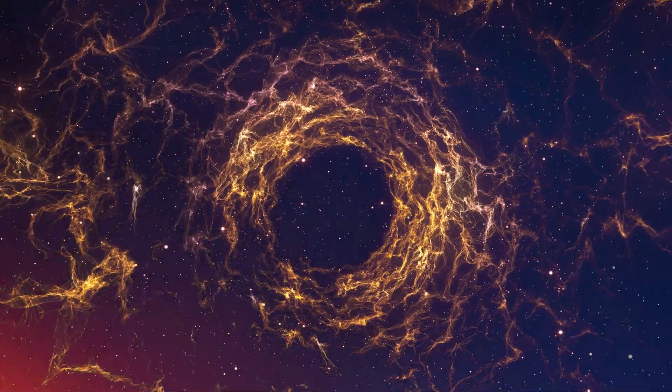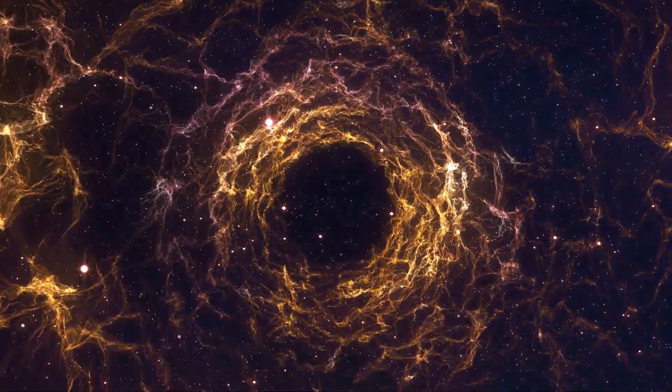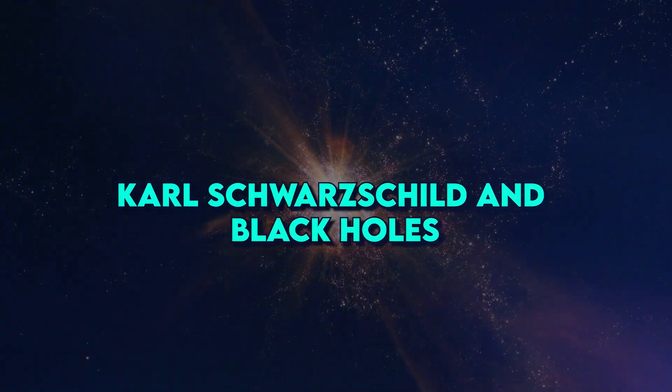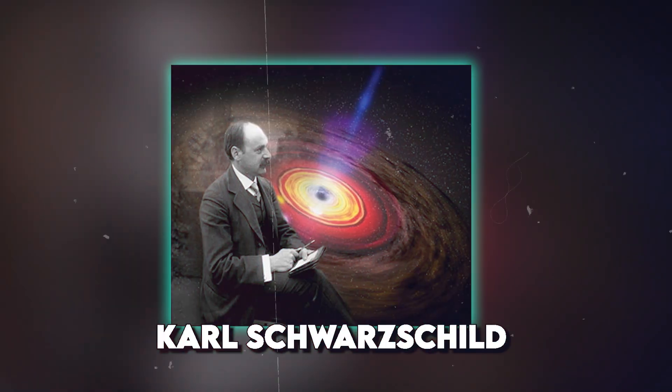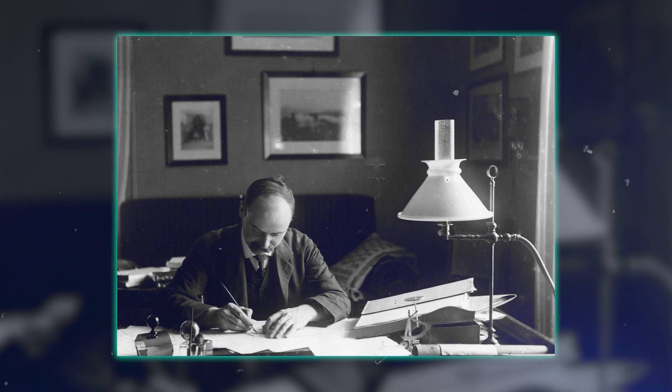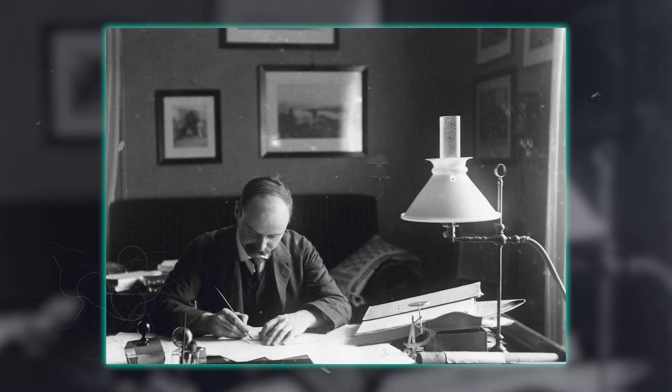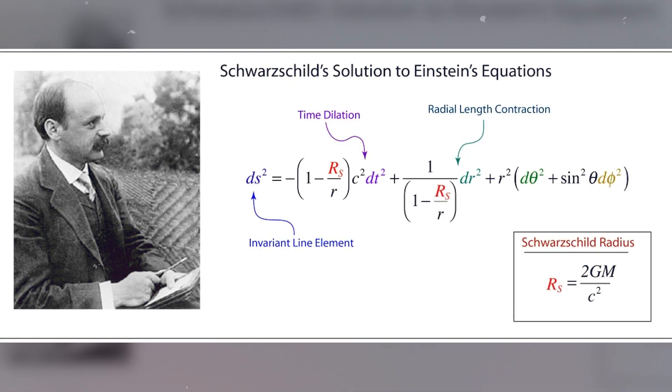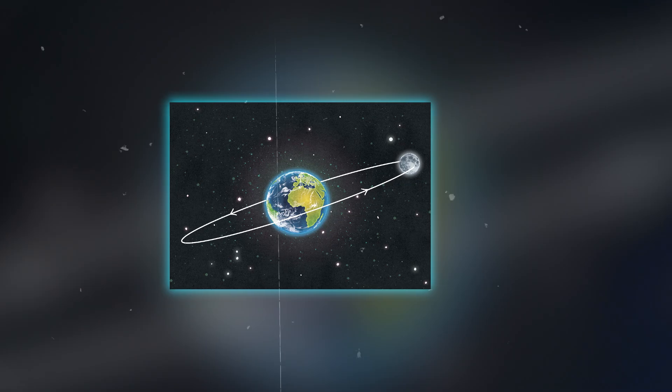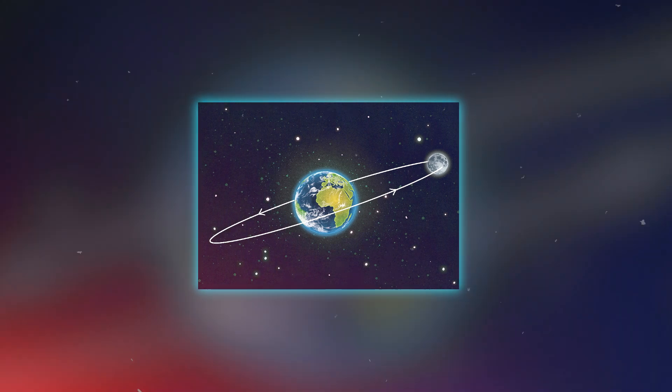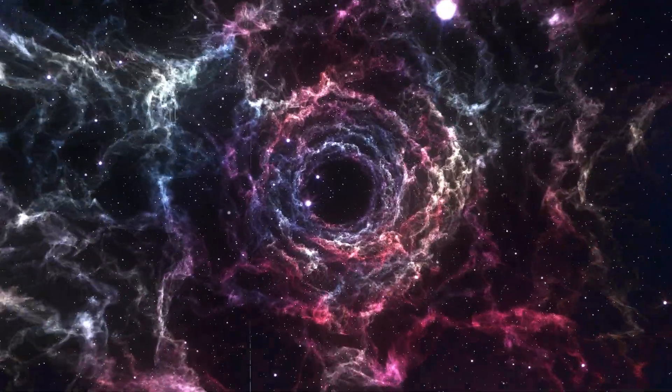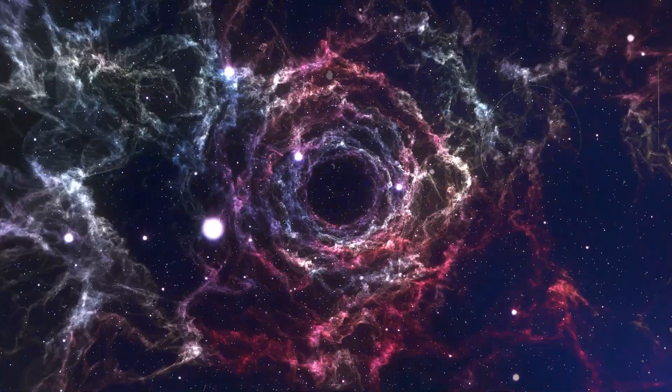Carl Schwarzschild, a German physicist, made a groundbreaking contribution to our understanding of black holes in 1916. He was the first to solve Einstein's field equations in a specific case, revealing the exact curvature of space-time around a spherically symmetric mass. This solution provided the foundation for our understanding of black holes.